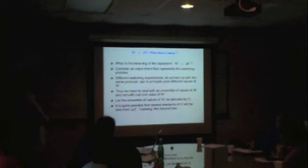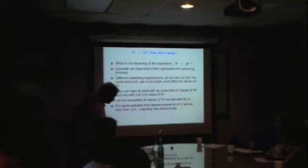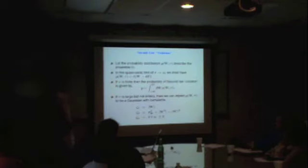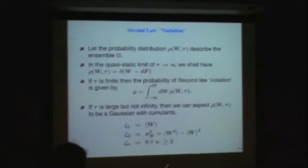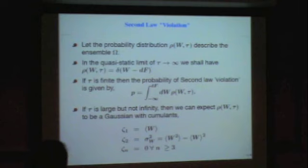So let the ensemble of values of w be denoted by Ω. It is quite possible that several elements of Ω will be less than Δf violating the second law. So let the probability distribution ρ(w), I am parametrizing it by a τ where τ is the time it takes for you to carry out that experiment. In the limit τ tending to infinity, you will find that it reduces to a delta function. That is the quasi-static limit, the reversible limit of τ tending to infinity.